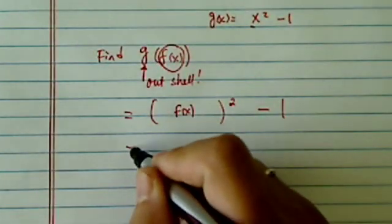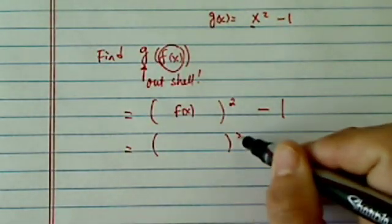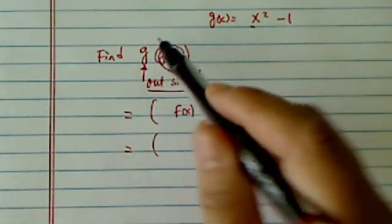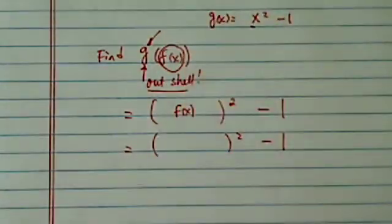Next thing is easy. You're just going to substitute it with what f of x is, keeping the shell that's given by g, the outermost function.